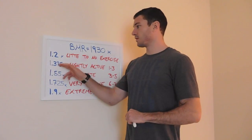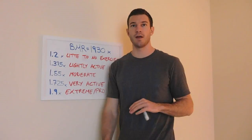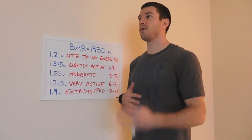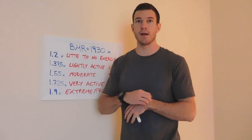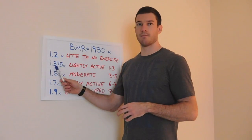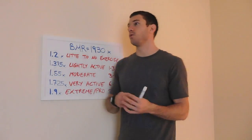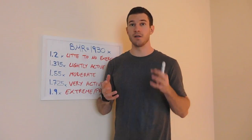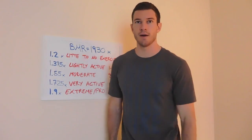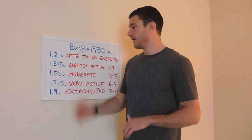The next level is lightly active — that's a multiplier of 1.375. This is for one to three times a week at the gym, maybe if you're a beginner not taking it too seriously. You would multiply your BMR by this number. The next level is moderate, meaning you're working out three to five times a week — you're pretty serious but not doing a crazy amount of work. I'm probably going to be in this level.